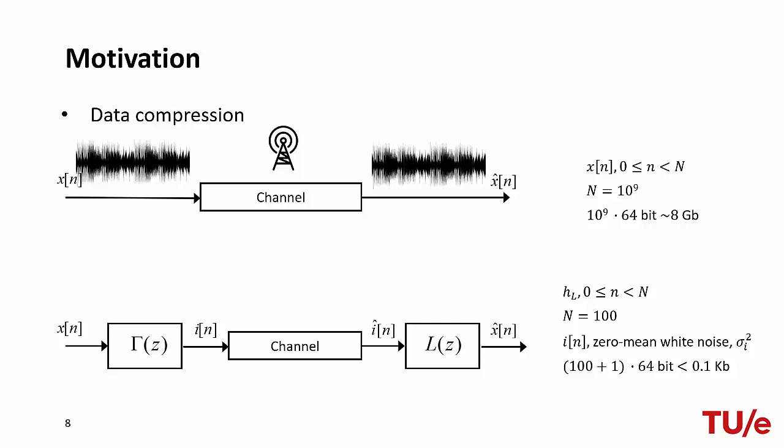At the receiver side, we would only need to synthesize a white noise sequence with given noise variance and filter it by the innovation filter to obtain an estimate of the original signal, which is equivalent to the original signal, at least from a statistical point of view.